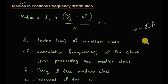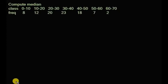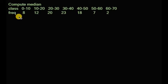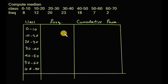Now let us look at a problem. We are asked to compute the median. The class intervals given are 0–10, 10–20, 20–30, 30–40, 40–50, and the frequencies are also given. We will make a table with columns for class, frequency, and cumulative frequency.